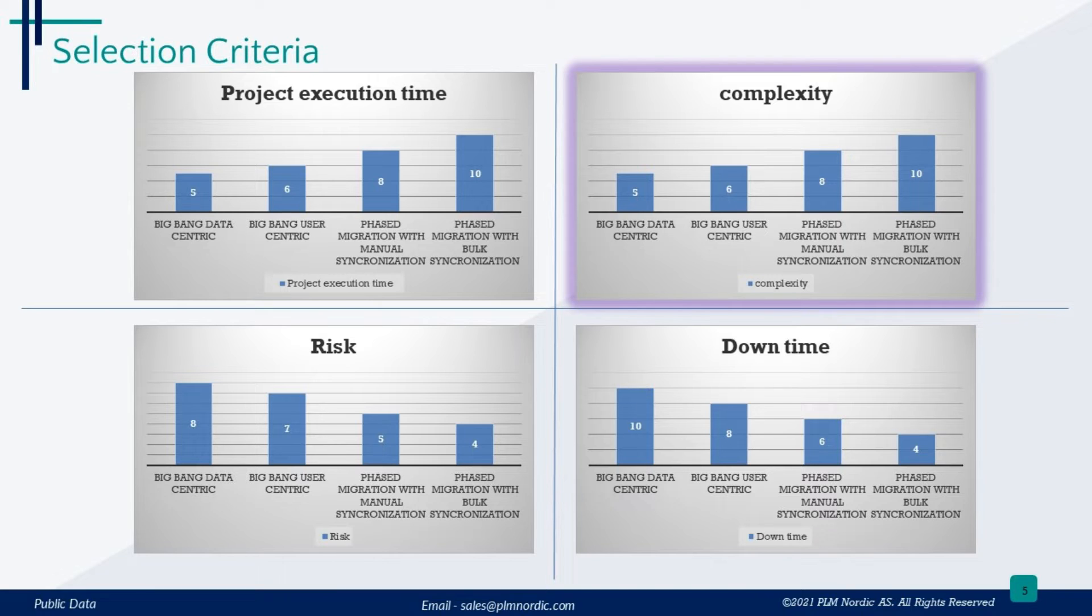Talking about complexity, starting with Big Bang data-centric migration is straightforward. But as you move to phased approaches, things get more complicated. You have to sync data in parallel, making the whole project more intricate compared to the simpler Big Bang method.